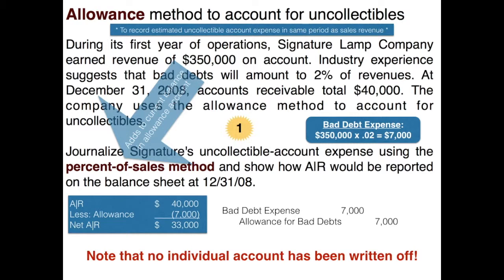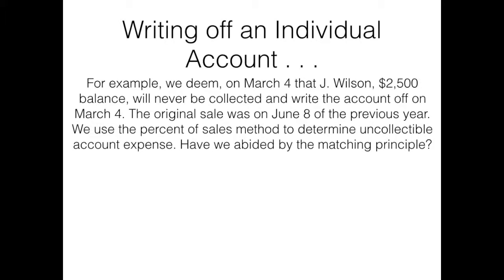So what happens when we do write off an individual account? For example, let's say on March 4th we deem that Jay Wilson, who has a $2,500 balance, will never be collected, and we write the account off. The original sale was on June 8th of the previous year — but we're okay because using the allowance method, we expensed the estimated uncollectibles in the correct year when the sale was made, so we've abided by the matching principle.